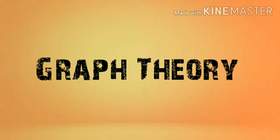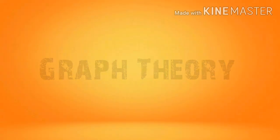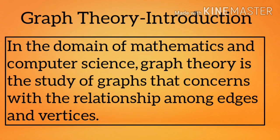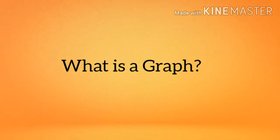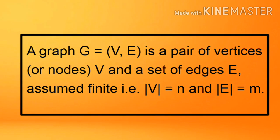What is graph theory? In the domain of mathematics and computer science, graph theory is the study of graphs that concern the relationship among edges and vertices. A graph is a pair of sets V comma E, where V is the set of vertices and E is the set of edges connecting the pairs of vertices. V and E are assumed finite — that is, V equal to N and E equal to M.